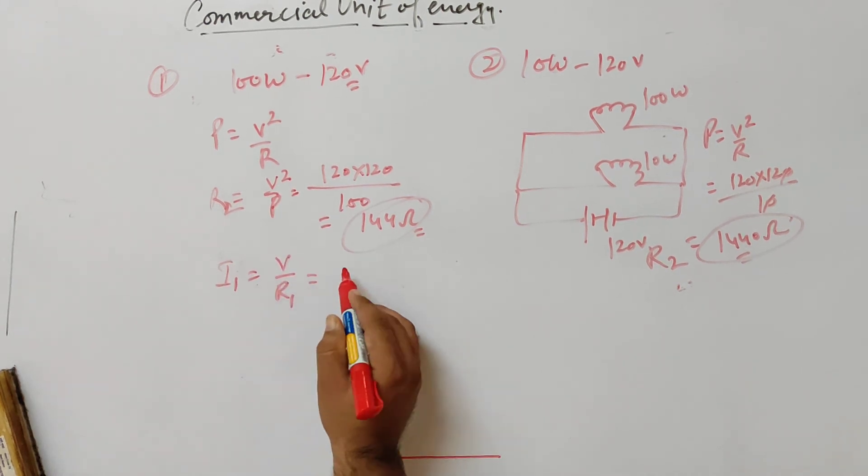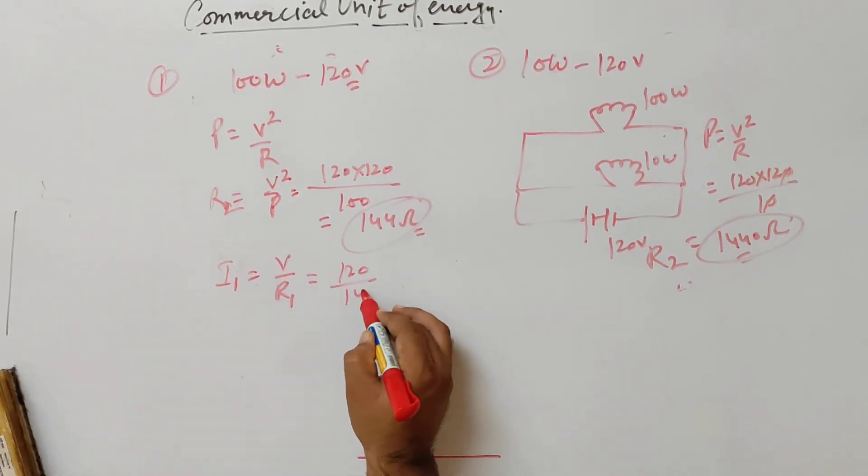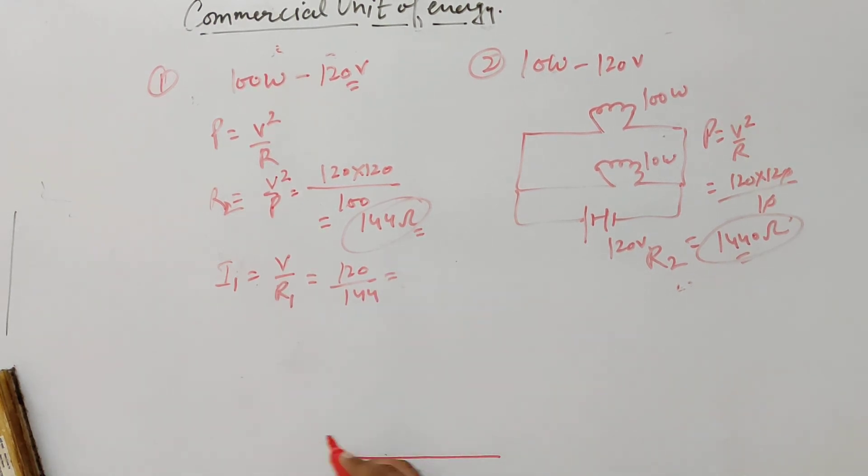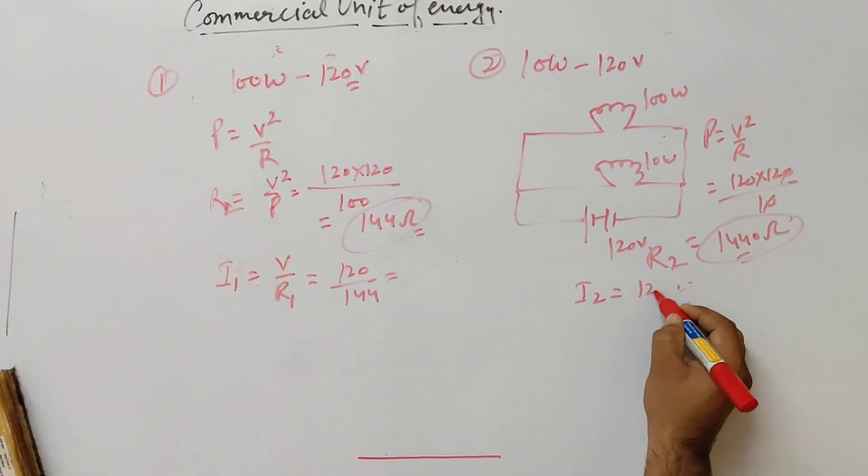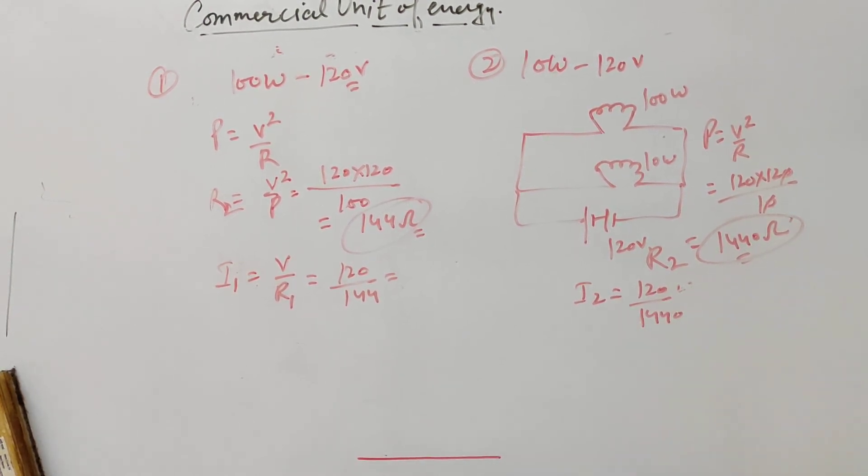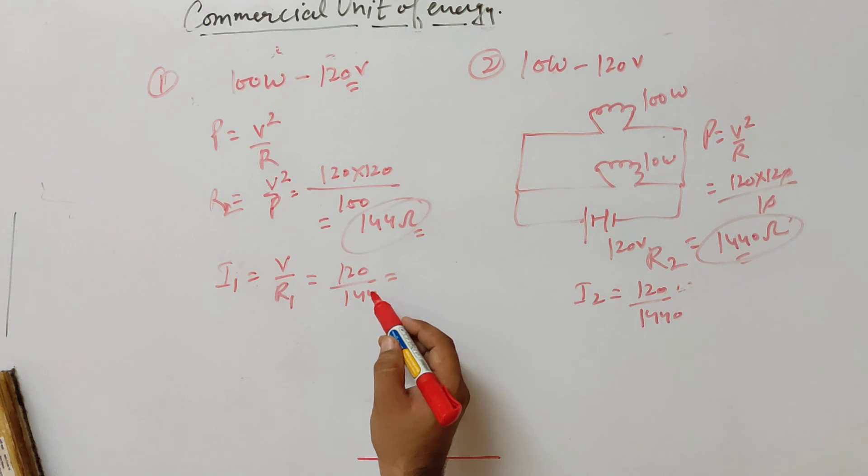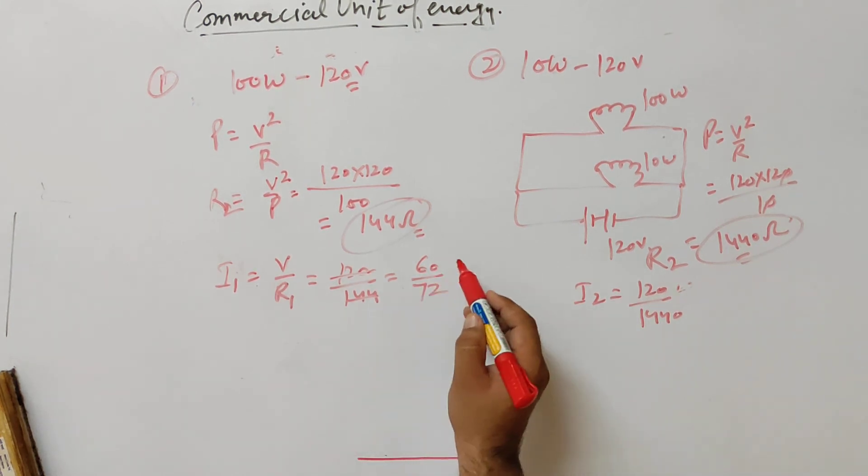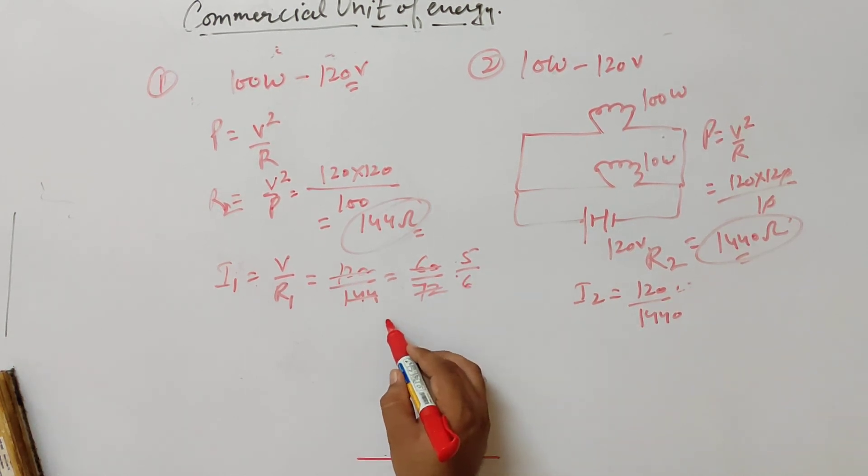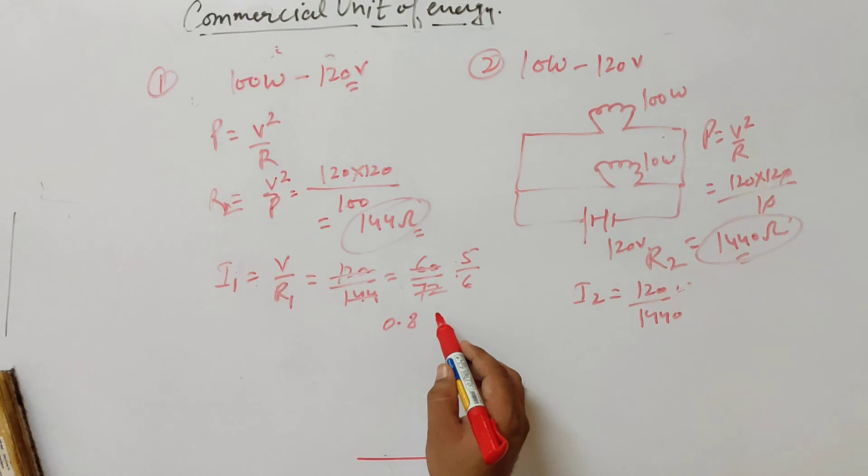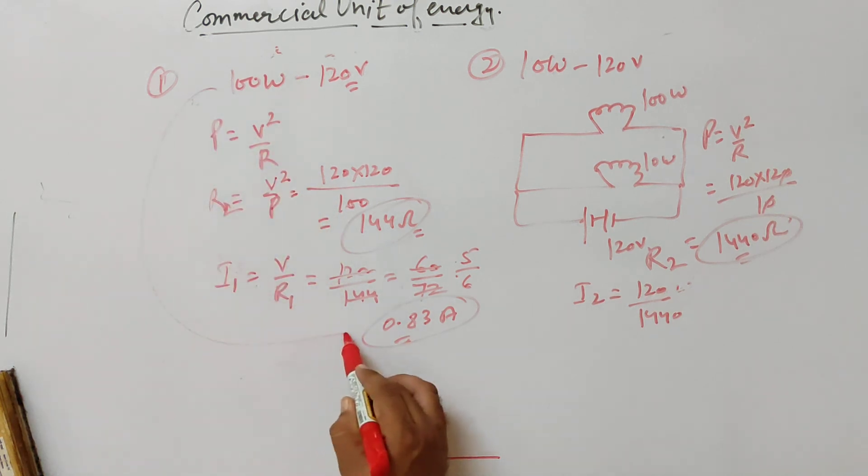We can find the current. I1 equals V by R1, which is 120 upon 144. If I solve this it comes to 0.83 ampere. I2 equals V by R2, which is 120 upon 1440, giving 0.83 ampere for the 100W bulb.